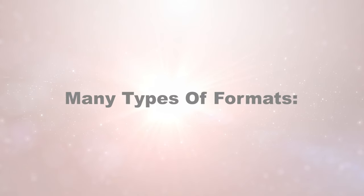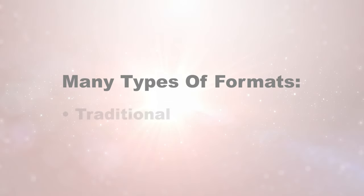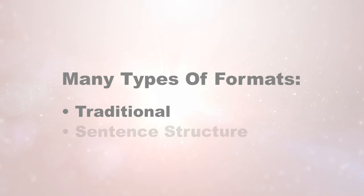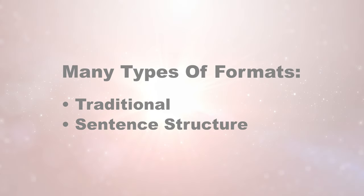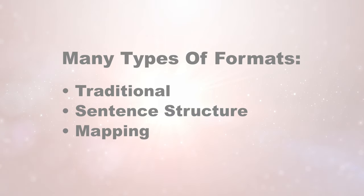Next, you'll want to prepare an outline. It doesn't really matter what kind of format you choose. You can choose a traditional outline format. Some people like to do a sentence outline format where the sentences are the opening parts of your paper, and others like to use a mapping format where they take different concepts and try to link those together. Use whatever works for you, but making an outline and laying out the paper ahead of time is an essential part of writing.